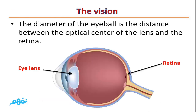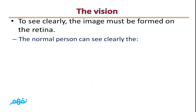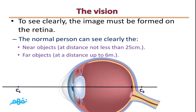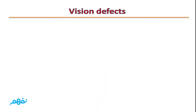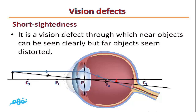The diameter of the eyeball is the distance between the optical center of the lens and the retina. To see clearly, the image must be formed on the retina. A normal person can see near objects clearly at a distance of not less than 25 cm, and far objects at a distance of up to 6 m. As you can see, in a normal eye the image is formed on the retina.